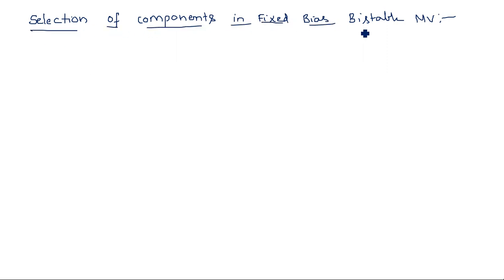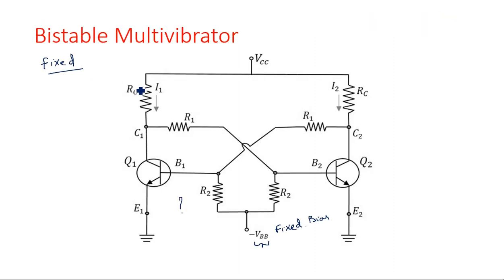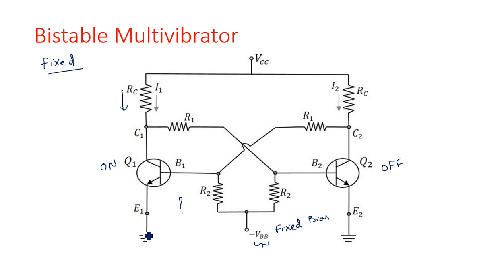Understanding how to choose the various parameters is very important when designing a fixed bias configuration. The collector current comes from VCC and enters the collectors of the transistors. Suppose transistor Q1 is in the ON state and Q2 is in the OFF state. When Q1 is ON, current flows through resistor RC from VCC, enters the collector, and flows down to ground. This current is IC.